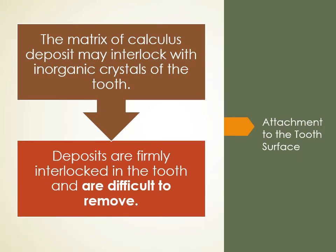When calculus attaches directly to the tooth surface, the matrix of the calculus deposit may actually interlock with inorganic crystals of the tooth. These deposits are firmly interlocked and very difficult to remove. The enamel surface is normally very smooth, and part of our job is making the tooth smooth again so calculus has a hard time attaching. However, patients whose teeth are naturally more porous will get more of this type of calculus attachment.